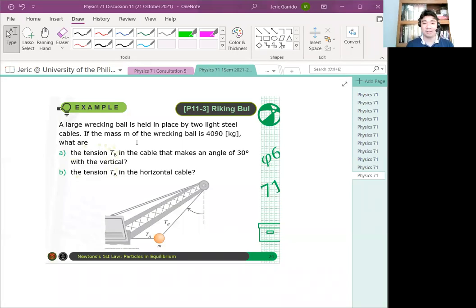Let's have another problem, wrecking ball. A large wrecking ball is held in place by two light steel cables. If the mass of the wrecking ball is 4,090 kilograms, what are: letter A, the tension TB in the cable that makes an angle of 30 degrees to the vertical, and letter B, the tension TA in the horizontal cable.